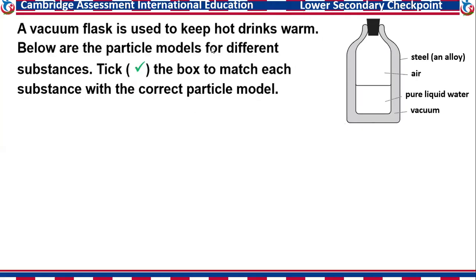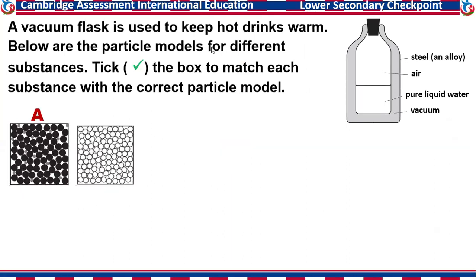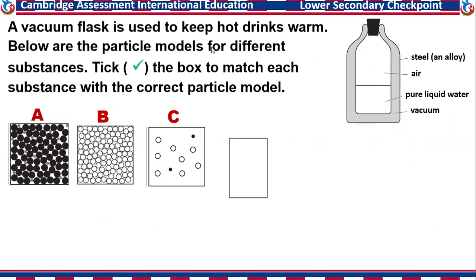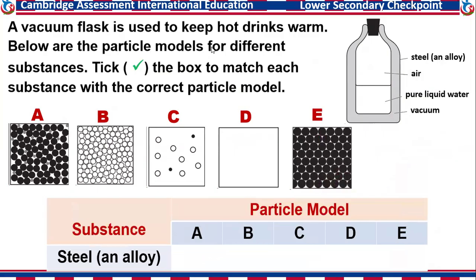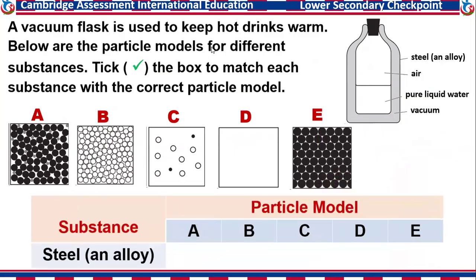Moving straight to our first question: Is a vacuum flask used to keep hot drinks warm? Below are the particle models for different substances. Tick the box to match each substance with the correct particle model. We have models A, B, C, D, and E representing different substances used in making the vacuum flask.